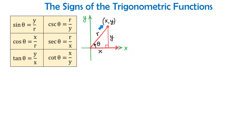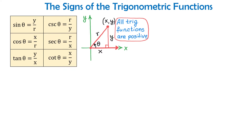In quadrant 1, both x and y are positive, and r is always positive regardless of the quadrant. So if we use x, y, and r in these functions, then all their values will be positive. So again, if an angle lies in quadrant 1, then all the trigonometric functions are positive.